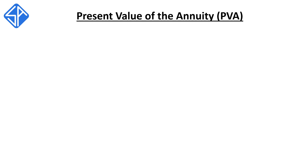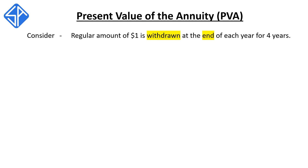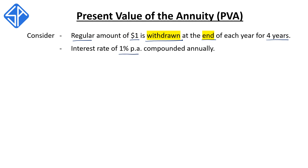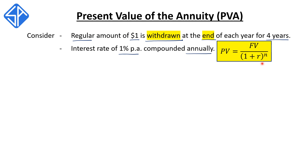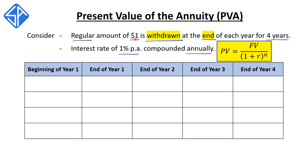Let's look at an example to help us better understand how present value of the annuity, or PVA, works. Consider a scenario where we want to be able to withdraw a regular amount of $1 at the end of each year for four years. The bank pays an interest rate of 1% per annum compounded annually. For this analysis, we're going to need to use the compound interest formula: PV equals FV divided by (1 plus R) to the N. PV is your present value, FV is the future value, R is the interest rate per period, and N is the number of periods.